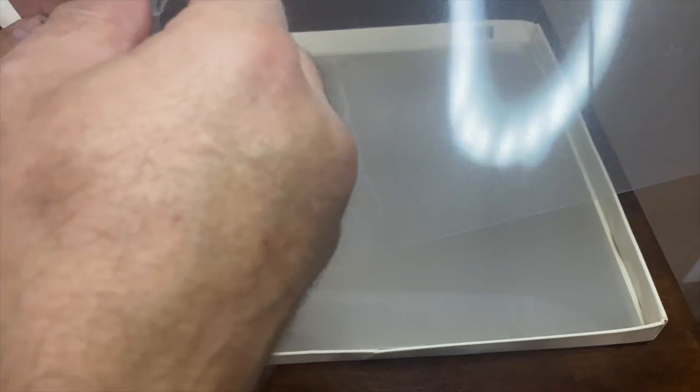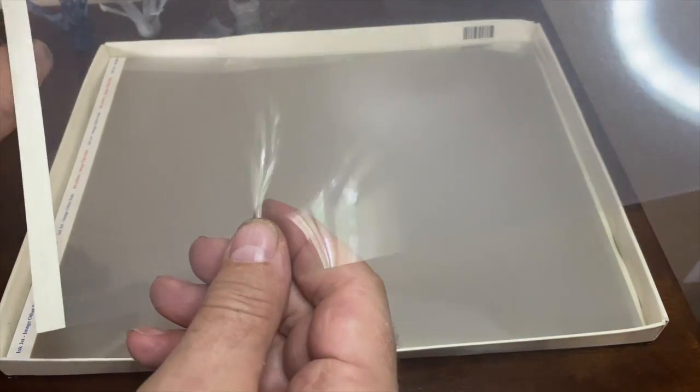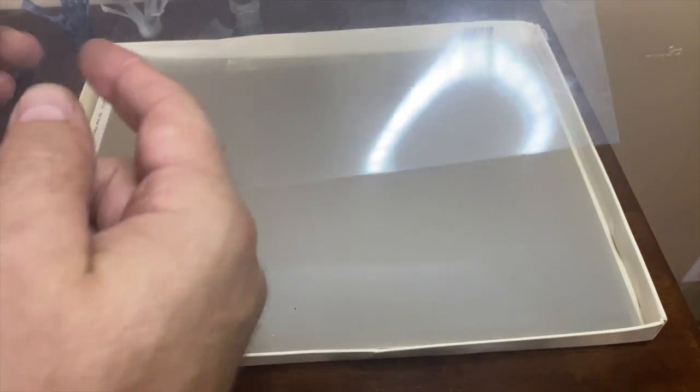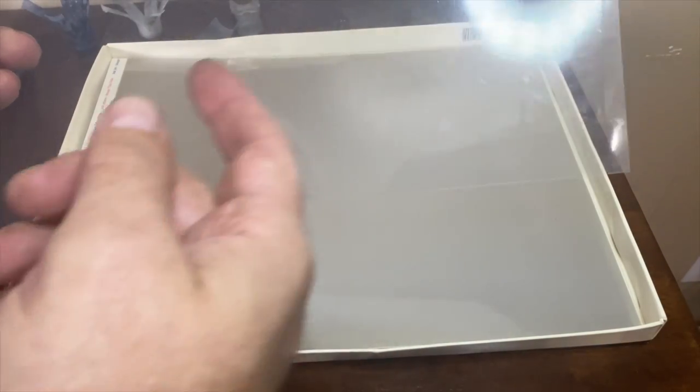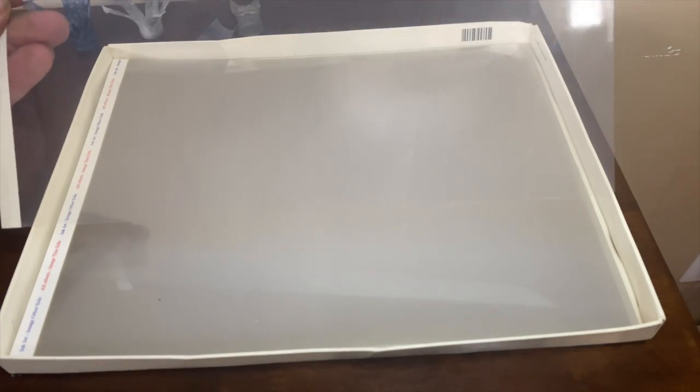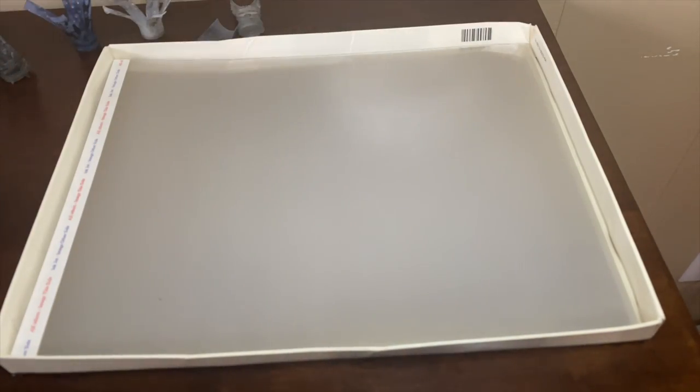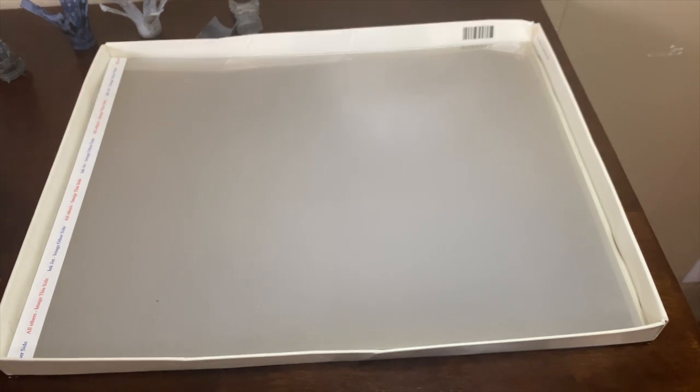One side of the transparency film is going to be textured, because whenever they print things on it, it has to have a texture. It has to have a texture in order to accept the ink, otherwise it just runs right off.